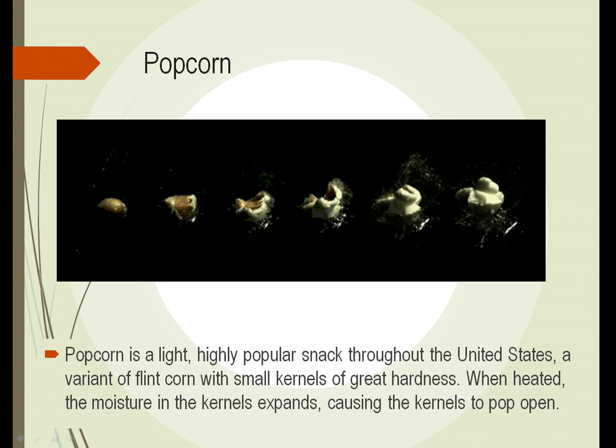Popcorn is a variety of flint corn where there's no dent in the top, and it contains a small amount of moisture even after drying and maturing. When heated to a certain temperature — basically the boiling point of water, 212 degrees Fahrenheit — that water is converted to steam. When water changes to steam, it expands 15 times in size, and that's what causes the popcorn to split open, pop, and expand.